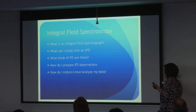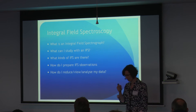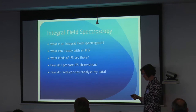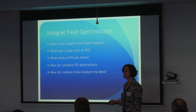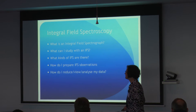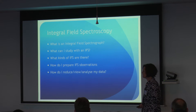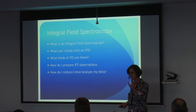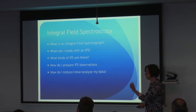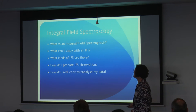How do I prepare integral field spectrograph observations, and how do I reduce, view, and analyze my data? This is a vaguely updated version of the talk I gave at a similar workshop in 2011, and there's been a lot of development since then. Hopefully there are pointers along the way of places where you can find more up-to-date information.